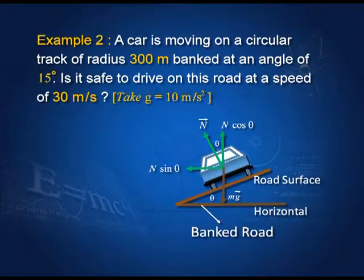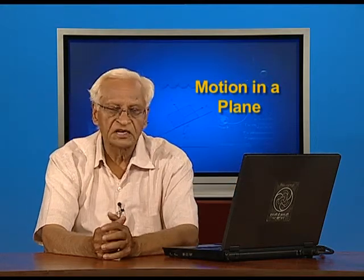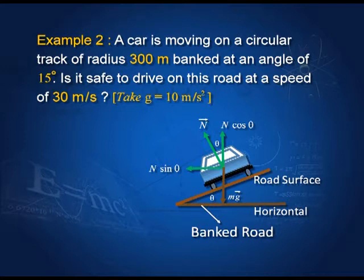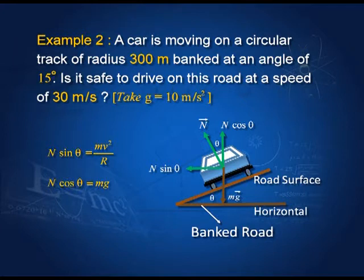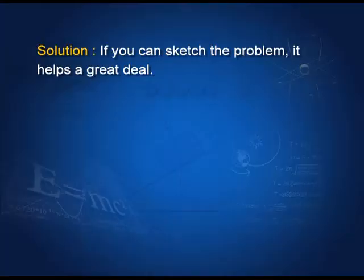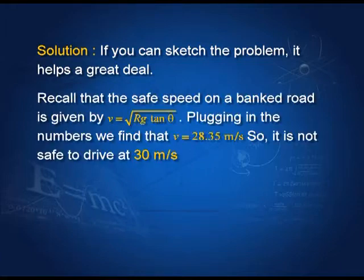Let us take another example about the banking of roads. A car is moving on a circular track of radius 300 meters banked at an angle of 15 degrees. Is it safe to drive on this road at a speed of 30 meters per second? We recall the equations from last lecture: N sinθ = mv²/r and N cosθ = mg. The safe speed on a banked road is given by the square root of rg tanθ. Plugging the numbers, v equals 28.35 meters per second.